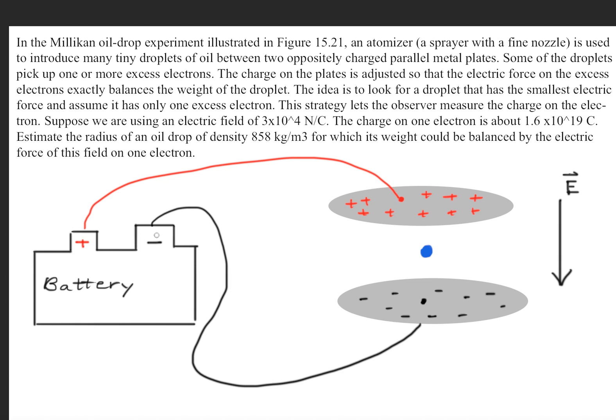The positive terminal of the battery introduces positively charged particles onto this plate. The negative terminal introduces negatively charged particles on this plate. Because they are parallel to one another and we're assuming these are large parallel plates, an electric field forms. The electric field is pointing from positive down to negative, so it's pointing downwards.